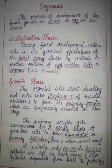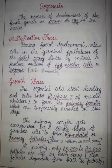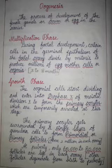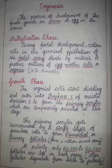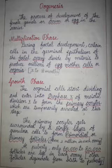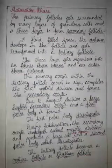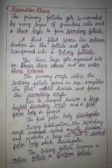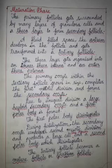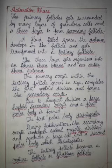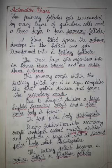Other follicles degenerate from birth to puberty. At adolescent age there will be 60,000 to 80,000 follicles remaining. The primary follicles have a single layer of granulosa cells. As development progresses, many layers of granulosa cells form around the secondary follicles.